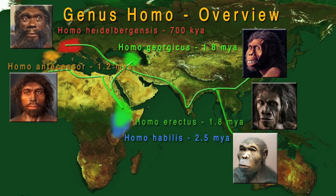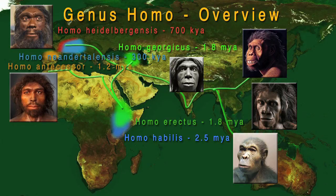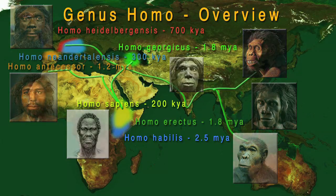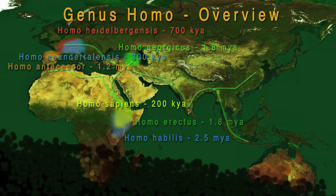Homo heidelbergensis gave rise to Homo neanderthalensis and Homo sapiens. Homo neanderthalensis appeared around 300,000 years ago in Europe. Homo sapiens appeared around 200,000 years ago in eastern Africa. Again, this is an oversimplification of a complex process, but it takes us where we want to go, and that is the 200,000 year mark in the appearance of Homo sapiens in Africa.